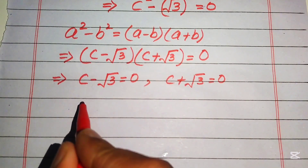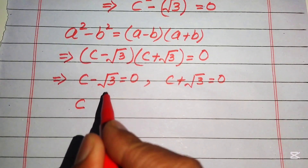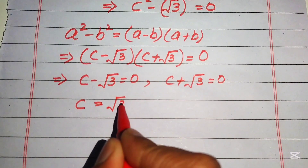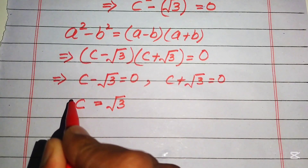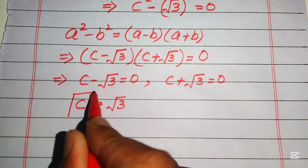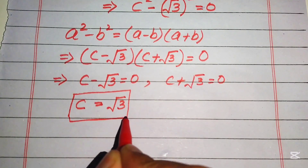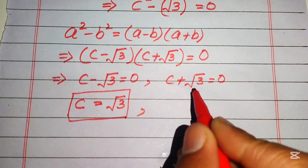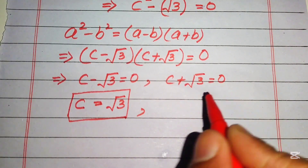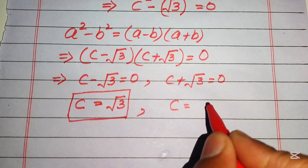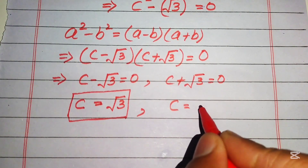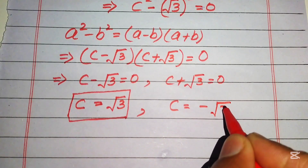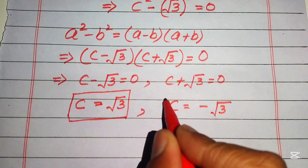In the first case, moving minus square root of three to the right gives c equals square root of three. In the second case, moving plus square root of three to the right gives c equals minus square root of three.